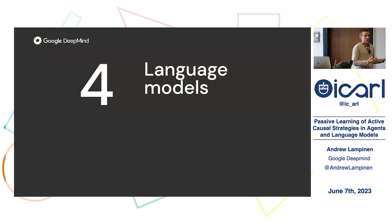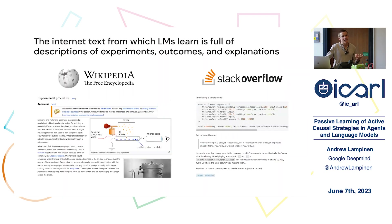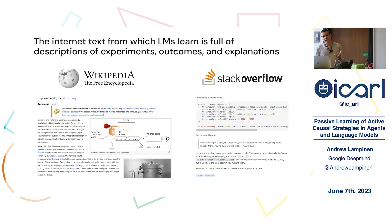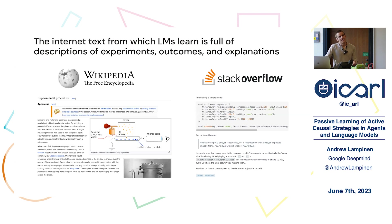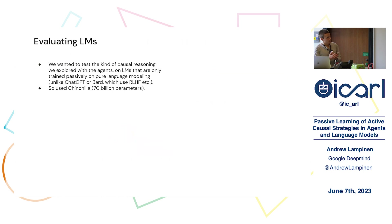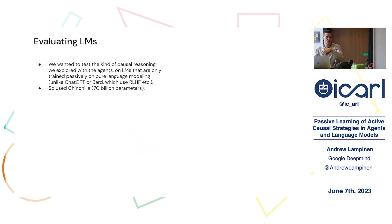Let's talk about language models. Language models are trained on passive data, but that passive data is internet text which contains lots of descriptions of experiments, their outcomes, and explanations — for example on Wikipedia, where you can read about science experiments, or on Stack Overflow, where you can read about debugging experiments and explanations of what happened and why. You might think that language models could take this passive training on information about experiments and explanations and use that to learn something about real causal structure. So we wanted to test the kinds of causal reasoning we explored with passively trained agents on language models that are also only trained passively — specifically the Chinchilla language model with 70 billion parameters.